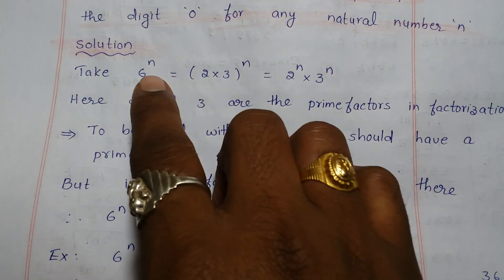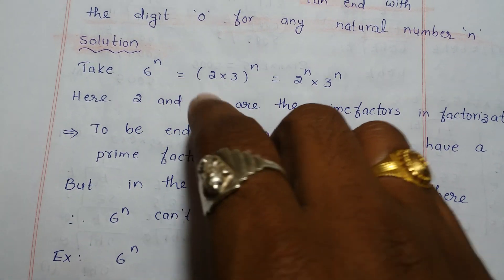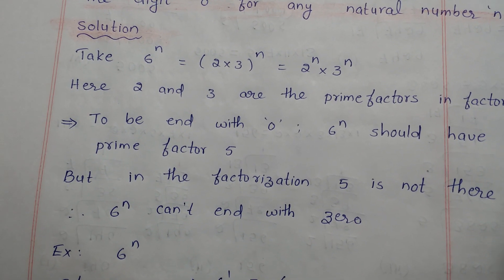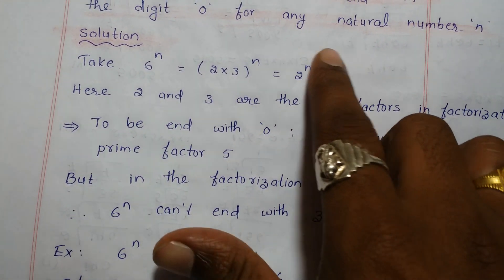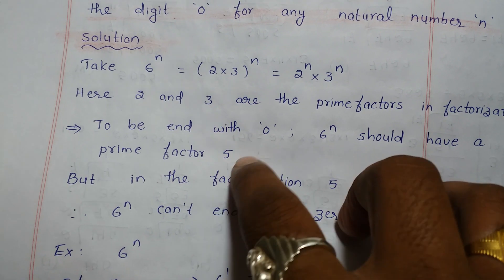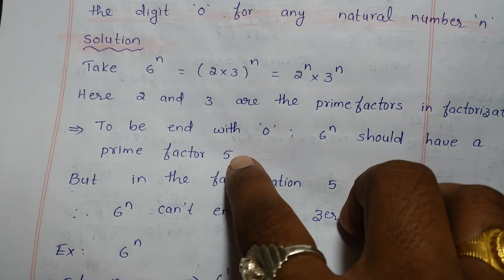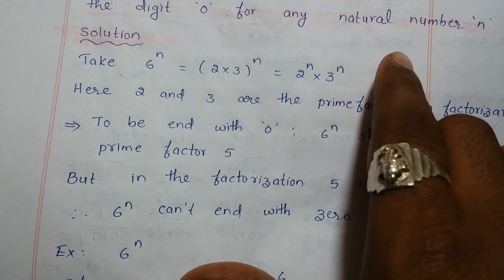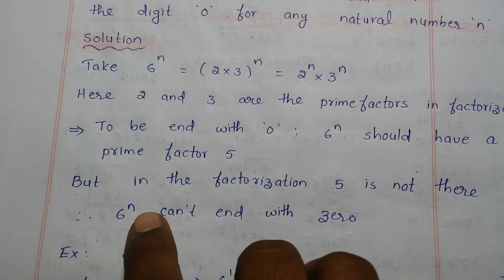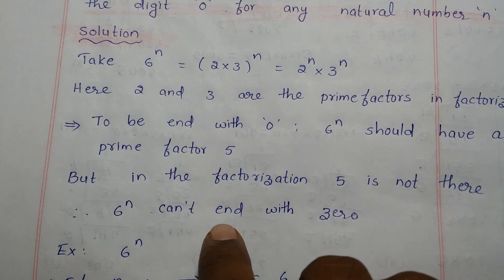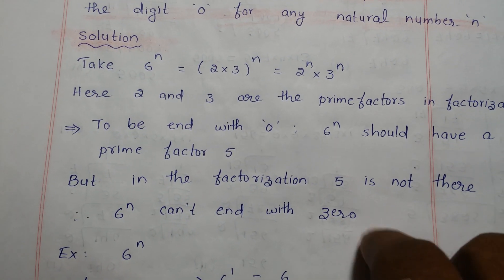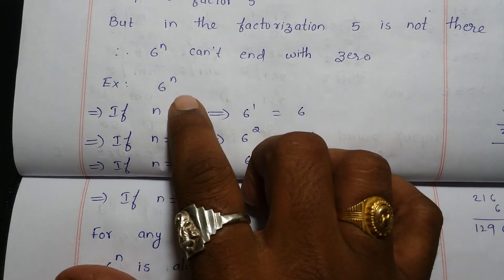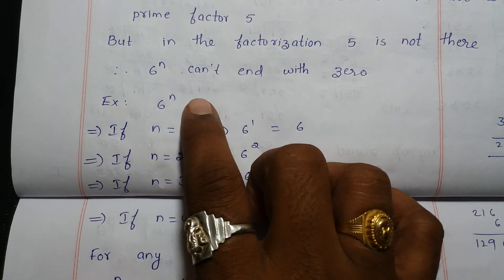If 6 to the power of n wants to end with 0, it should contain 5 as a prime factor. But 5 is not present in the prime factorization of 6 to the power of n. That is why 6 to the power of n cannot end with 0.